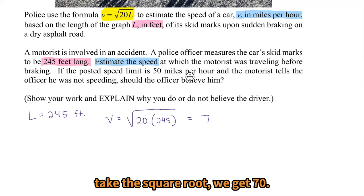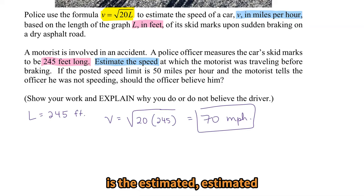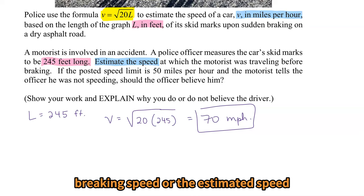And this is in miles per hour. 70 miles per hour is the estimated braking speed, or the estimated speed the moment that the motorist applies the brakes.